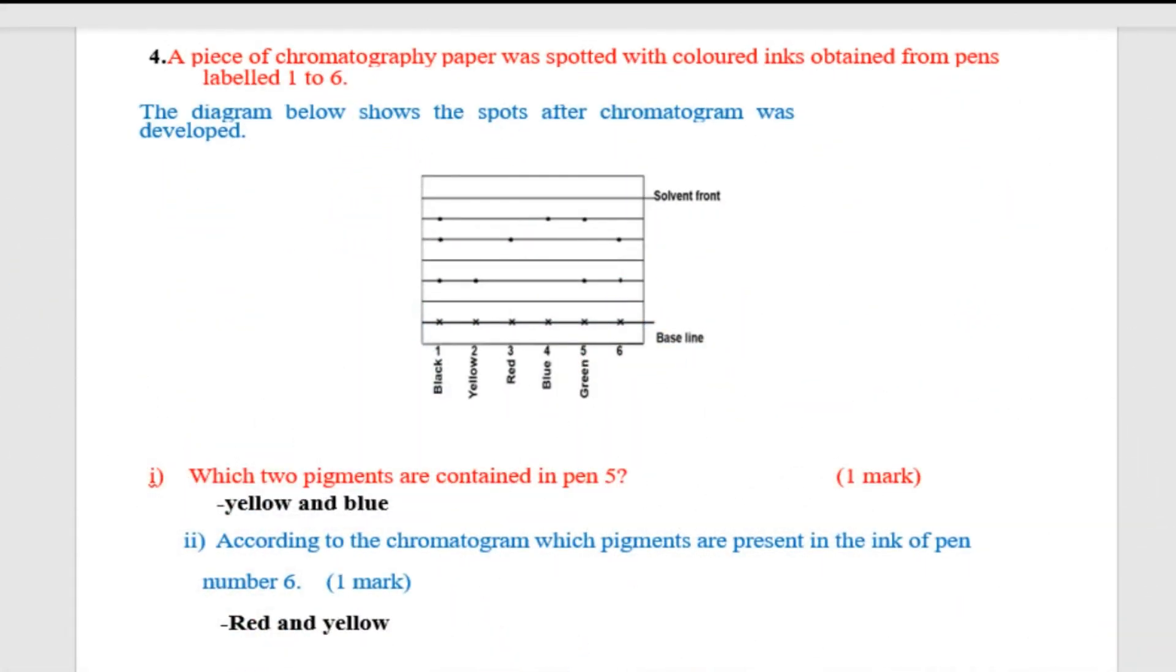Let's move to number four, Roman two. You are told according to the chromatogram, which pigments are present in ink of pen number six. And those are red and yellow.